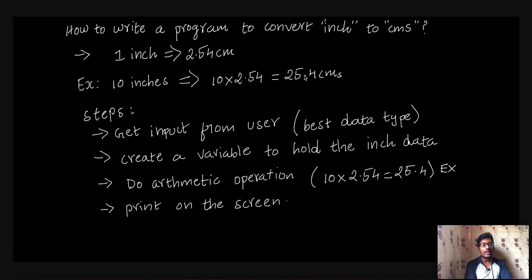Now we are going to write a program to convert inch to centimeters which is the simplest program to explain arithmetic operation. So the basic formula to convert inch to centimeters is 1 inch equal to 2.54 centimeter.